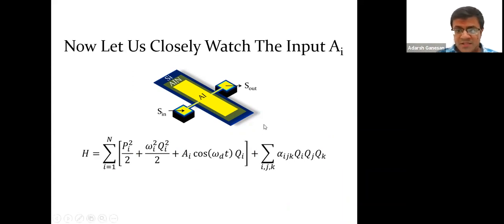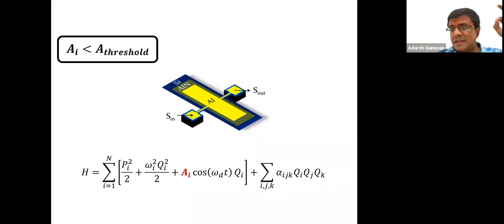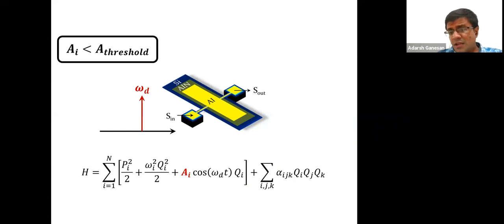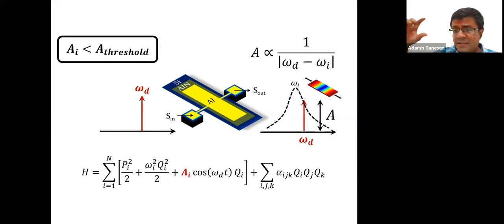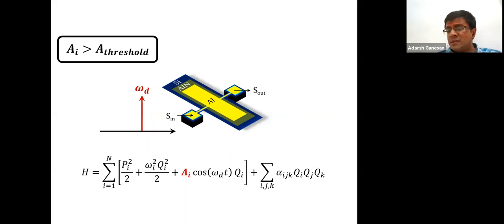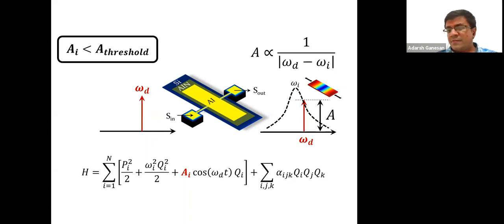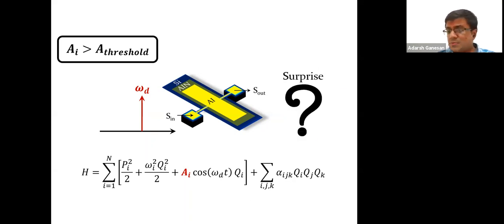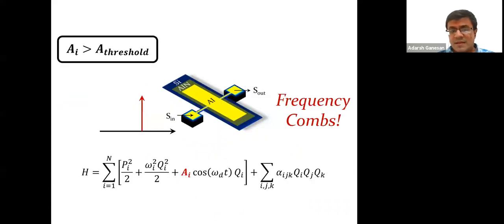Let us closely watch the input amplitude A_I. Supposing A_I is going to be less than some threshold value — some power threshold — and we are supplying a signal at frequency ω_d with power lower than threshold, what you get out is a single tone, with amplitude determined by how far ω_d is from the resonance frequency of the mechanical device. But if A_I goes above threshold, the simple math does not hold true — that's when the surprise comes in, and that's when we get frequency combs.